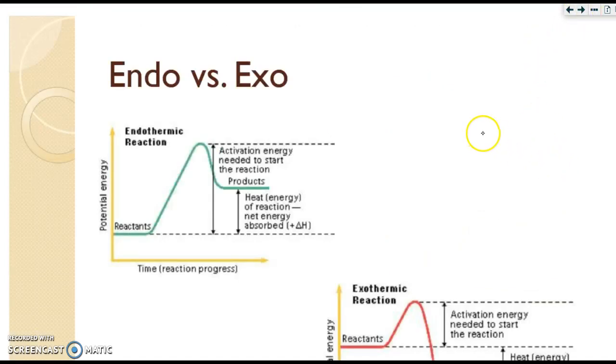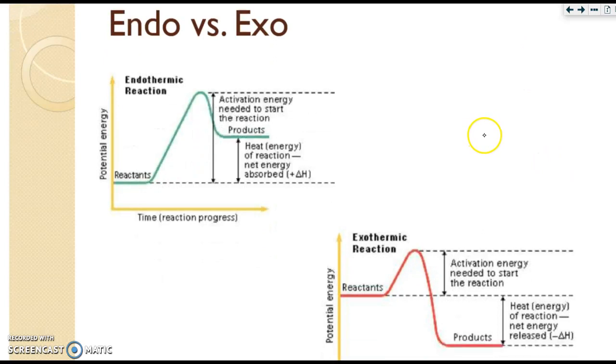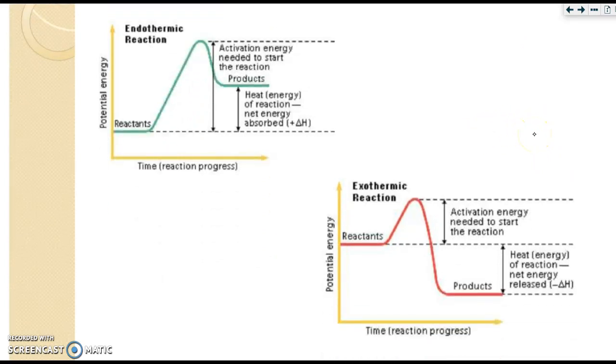Let's revisit endo and exothermic. We discussed these in the thermochemistry unit. These are energy diagrams for both of those. An endothermic reaction has energy down here where the reactants are lower than the products, so energy or heat needs to be added for the reaction to proceed. This right here is your activated complex. Here are your reactants. Here are your products. And then the activation energy would be from here down to where your reactants are.